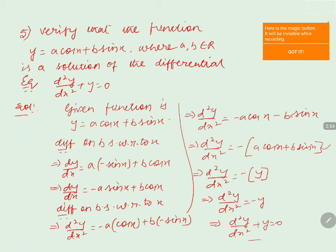So we can say that y = a·cos(x) + b·sin(x) is a solution of the differential equation d²y/dx² + y = 0.